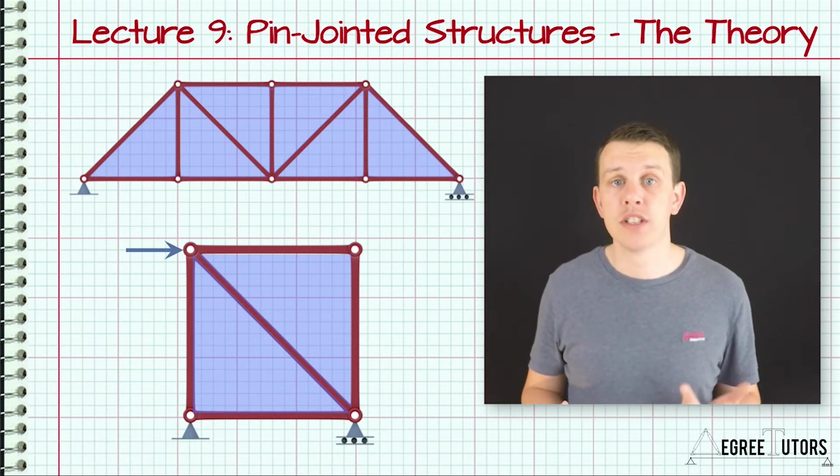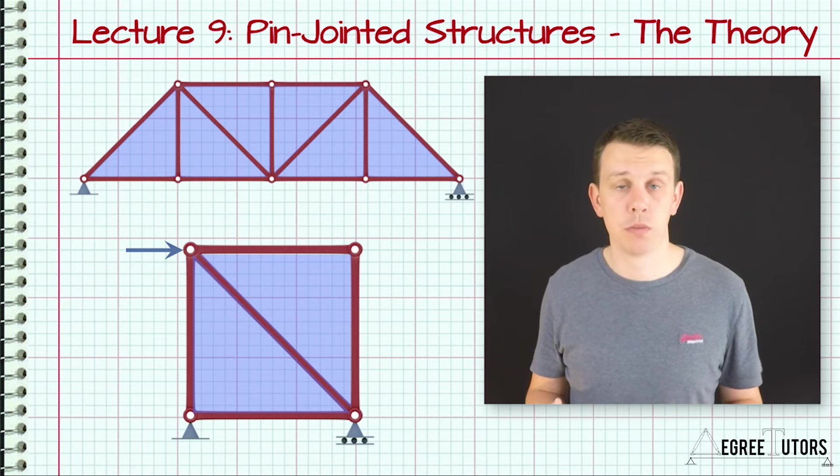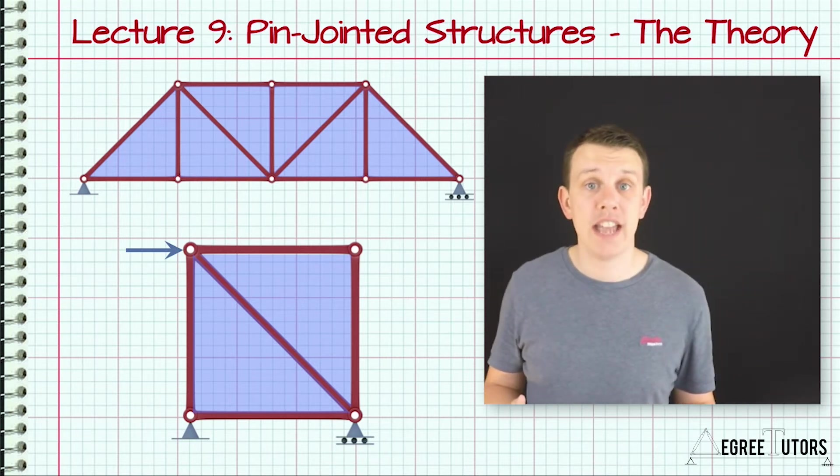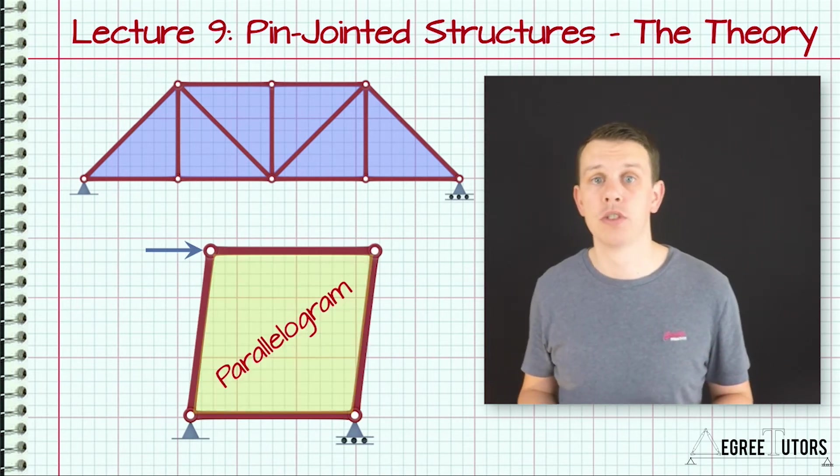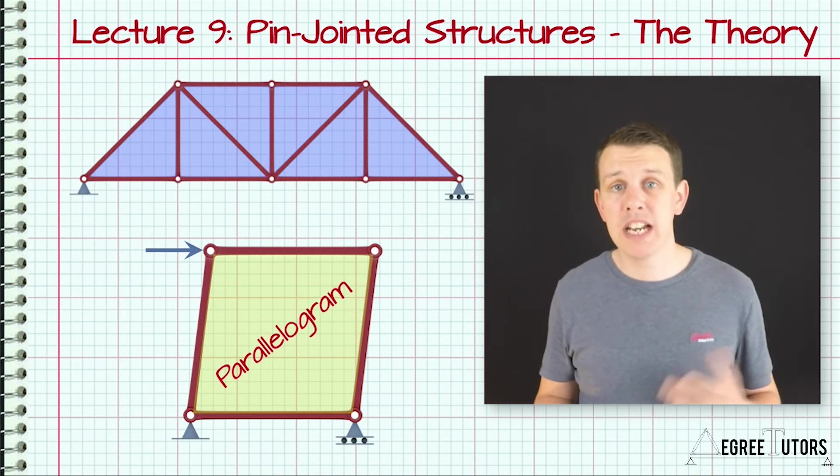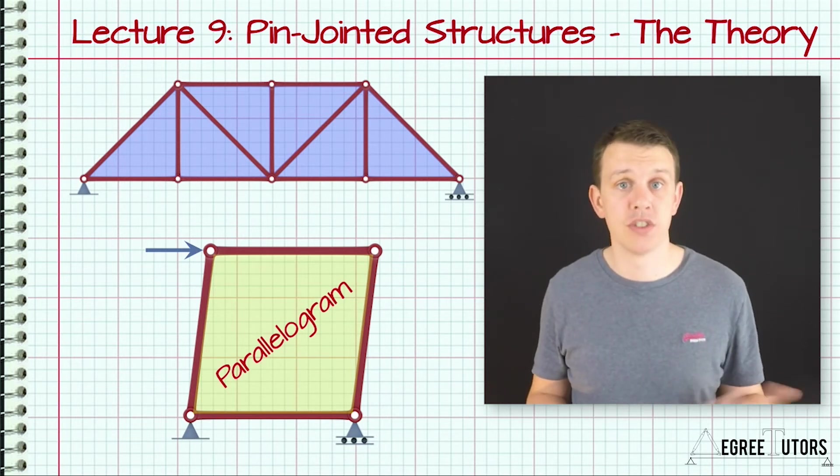A pin-jointed structure that doesn't hold its shape when loads are applied to it is called a mechanism. A lack of triangulation in a pin-jointed structure will typically lead to a mechanism, and mechanisms aren't a suitable form of structure. We'll discuss mechanisms in more detail when we analyze trusses in the upcoming lectures.